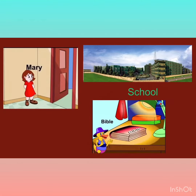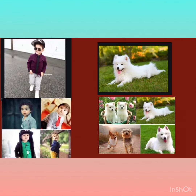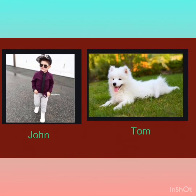Here you can see proper nouns and common nouns. School is a common noun, and Mary, Bible — these are proper nouns. A common noun can be used commonly for persons, animals, places, or things and represents a whole class. For example, boy can be used for all boys, dog for all dogs. A proper noun is a particular name of a common noun — for example, boy: John; dog: Tom.